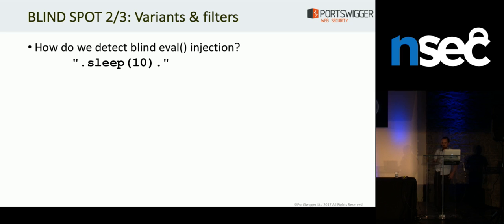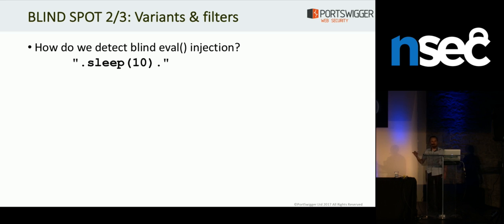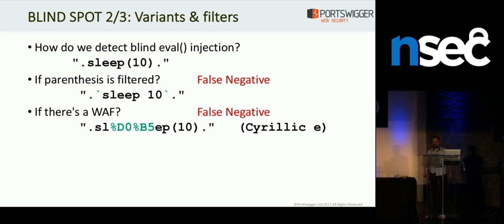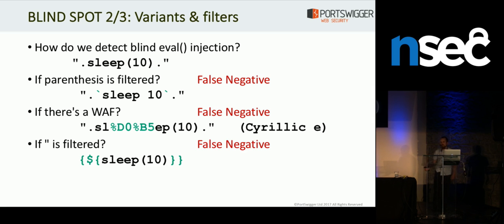The second blind spot is that we're limited to languages that the scanner explicitly supports. Let's say we know the server is vulnerable to PHP code injection. A scanner will typically send a payload like what you see here, and if the server's vulnerable it will sleep for 10 seconds before it replies. But what if the server is filtering out parentheses? The scanner's payload won't find the vulnerability — it will get a false negative. You can still exploit it using backticks or a million other methods, but the scanner won't find it. And if there's a web application firewall looking for the sleep keyword, once again that will just stop the scanner from finding it, even though it's probably still exploitable. I'm just using a Cyrillic E there, but that's one example of many potential WAF bypasses. And obviously, if double quotes are filtered, this payload won't work, but it still exploits. Two of those three examples are from pen tests that I've done personally.